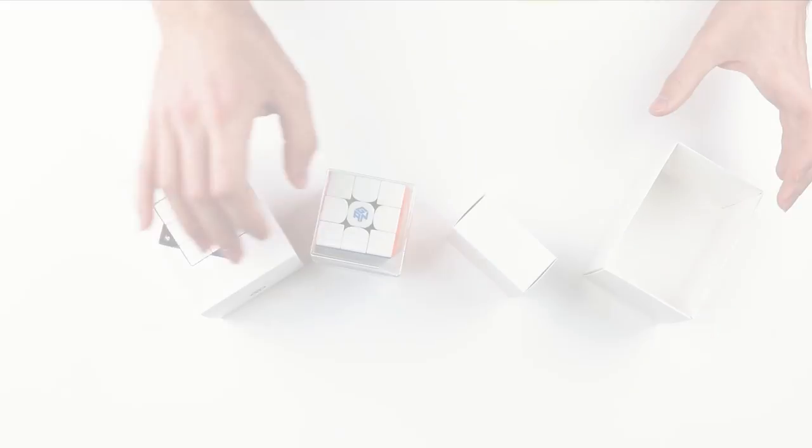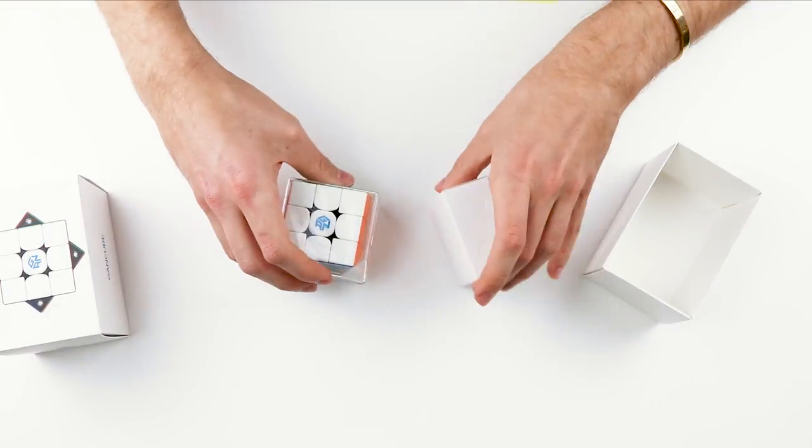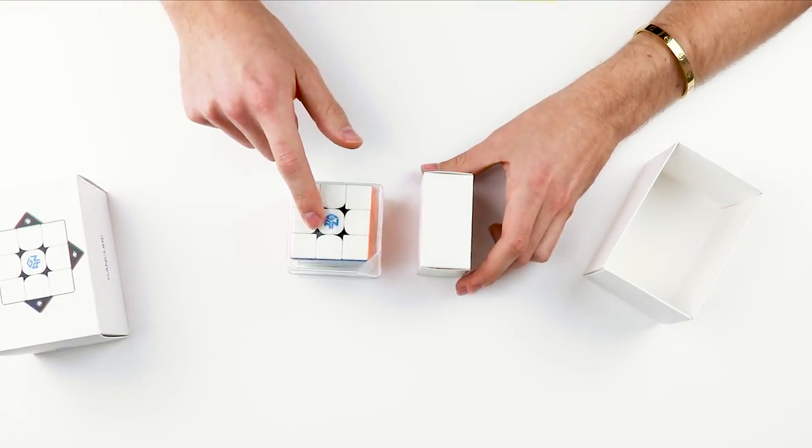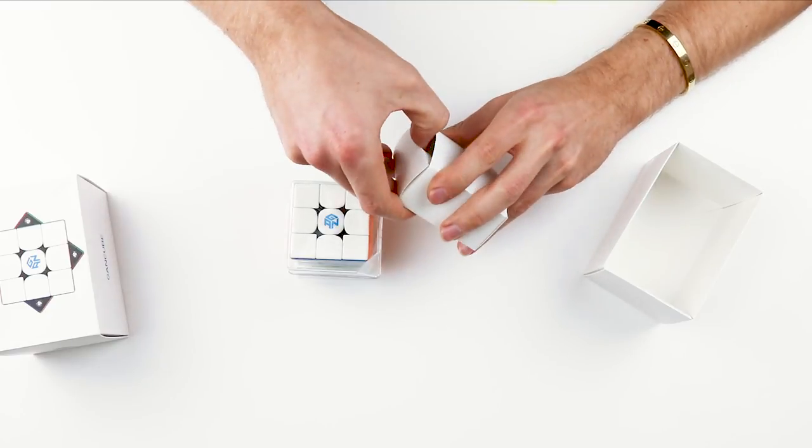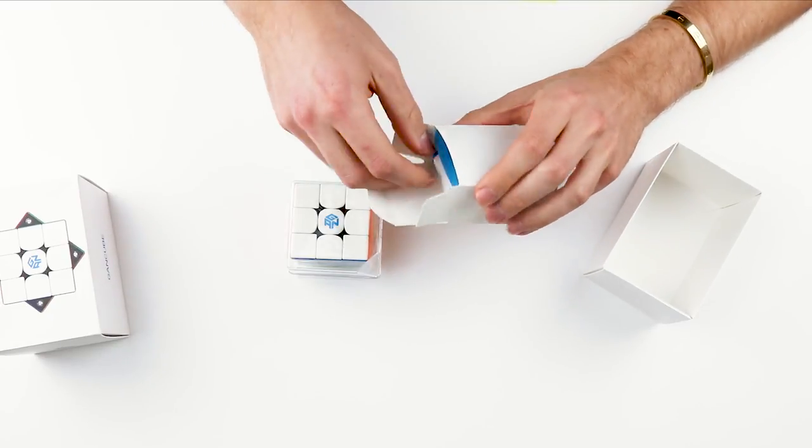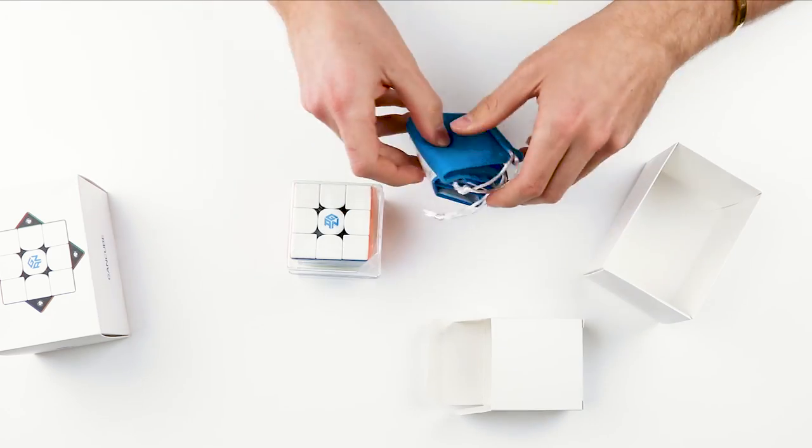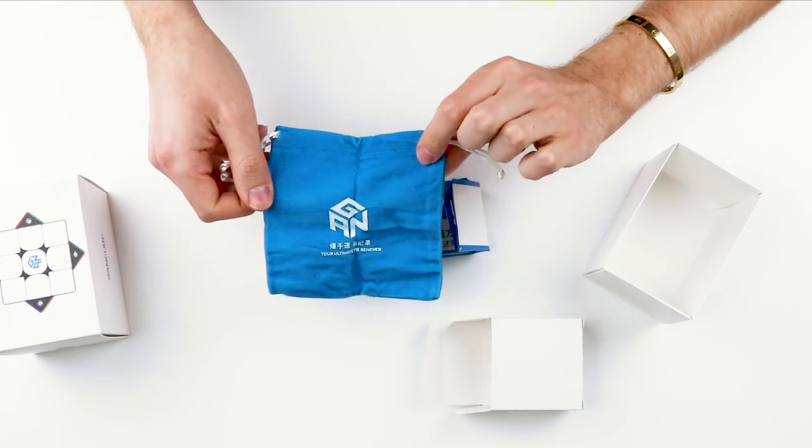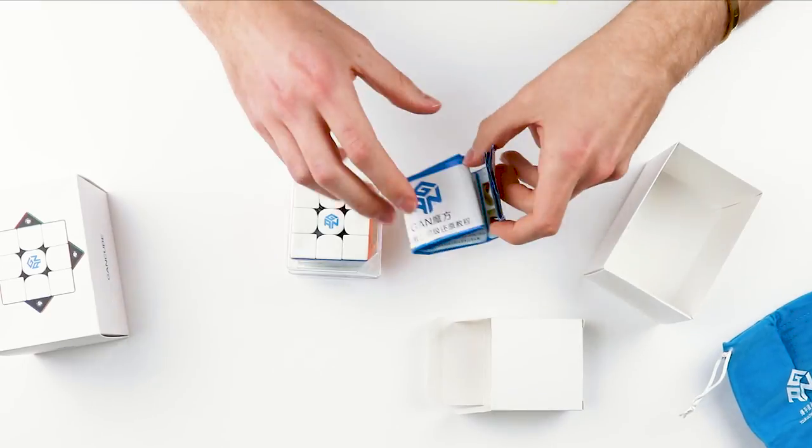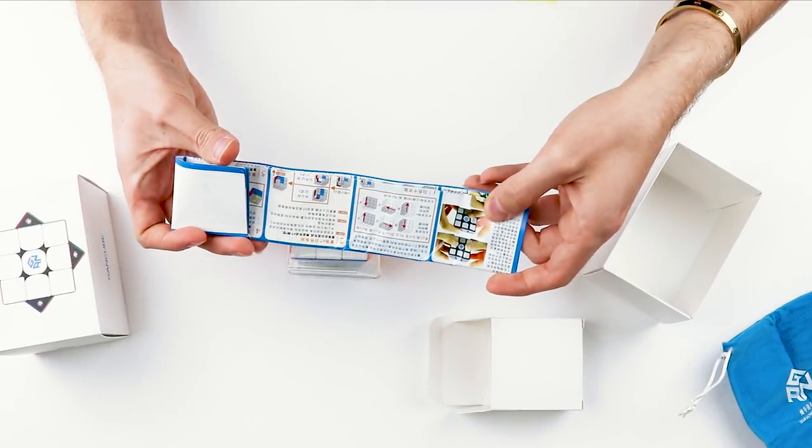Included with the 356M, if you have the light version like we do in this video, you're going to just have the traditional GAN blue cube bag and the CFOP solving guide. So there's the cube bag and then the CFOP solve guide.